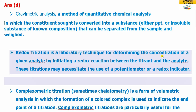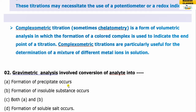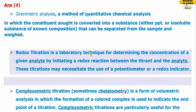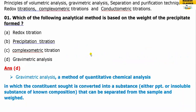In redox titration, the analyte concentration is determined based on electron transfer reactions — electron losing and gaining — using a potentiometer. In complexometric titration, at the end point we can determine the concentration of particular metals. So for question one, your answer is gravimetric analysis.